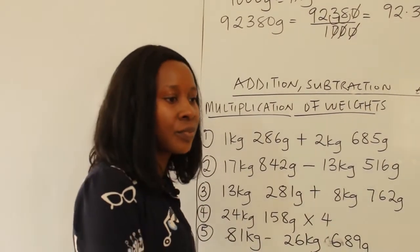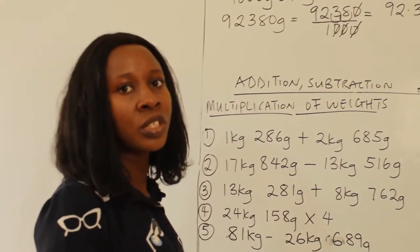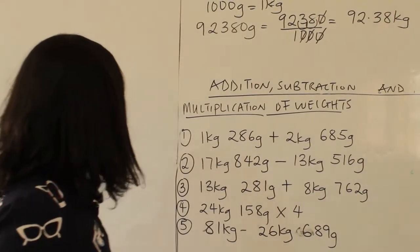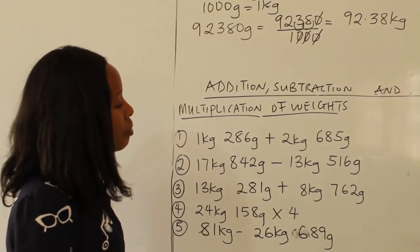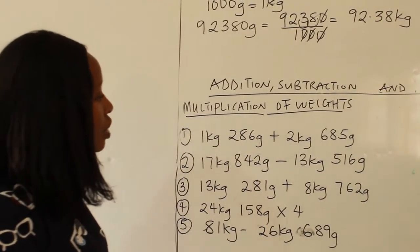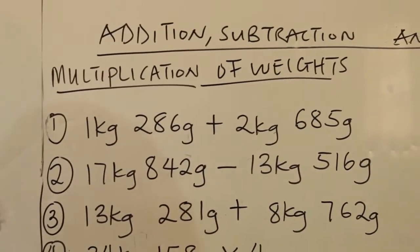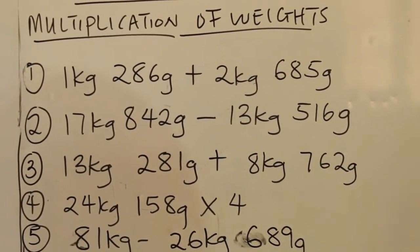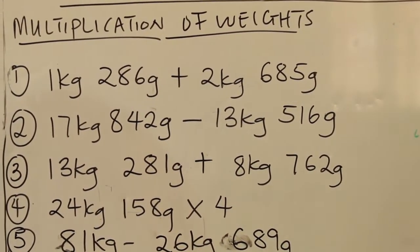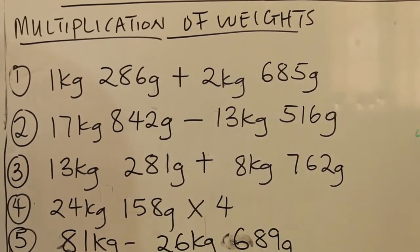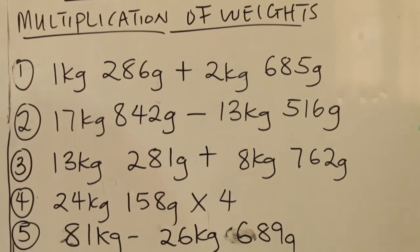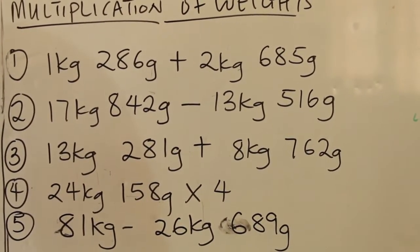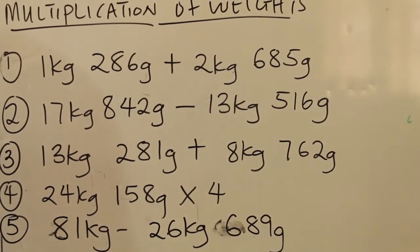Next, we'll be learning how to add, subtract, and multiply weights. I have some questions to solve. Question 1: 1 kg 286 g plus 2 kg 685 g. Question 2: 17 kg 842 g minus 13 kg 516 g. Question 3: 13 kg 281 g plus 8 kg 762 g. Question 4: 24 kg 158 g times 4. Question 5: 81 kg minus 26 kg 689 g.